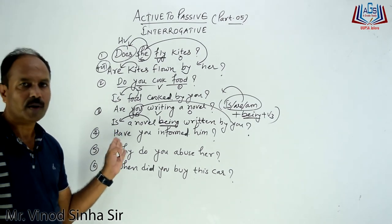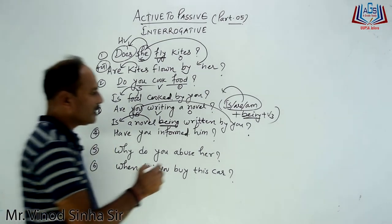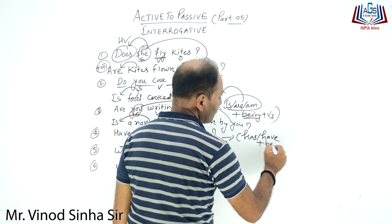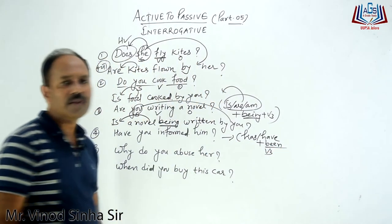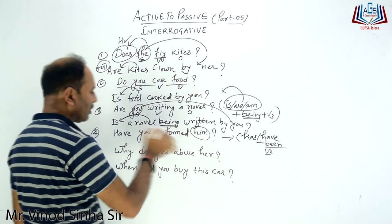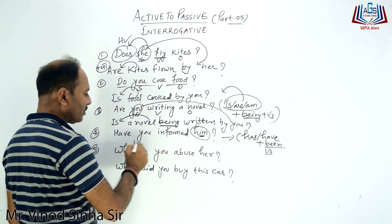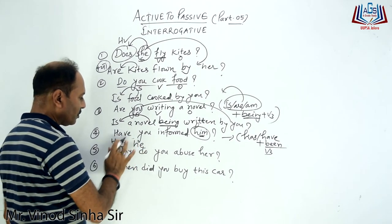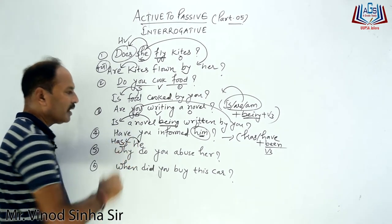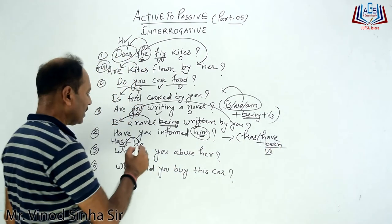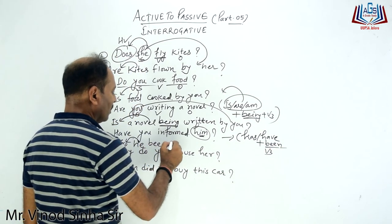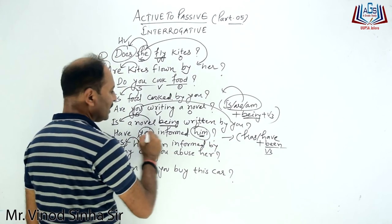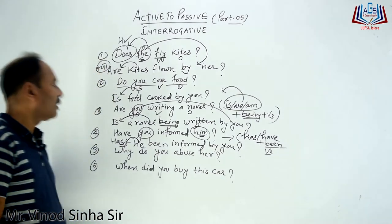अगले वाले में — I hope आप लोगों ने identify कर लिया होगा — it is of Present Perfect। जैसे आपके दिमाग में Present Perfect आए, तो 'has/have' होता ही है इसके अंदर। Passive बनाने में भी, लेकिन इसमें जोड़ना क्या पड़ता है? 'Been' — third form तो पहले से ही है। अब 'him' को इधर लेके आएंगे तो क्या बनेगा? 'He' — और 'he' के लिए helping verb क्या बनेगा? 'Has'। यह ध्यान रखना। तो: Has he been informed by you? — यह आपका subject है, यह हो जाएगा।